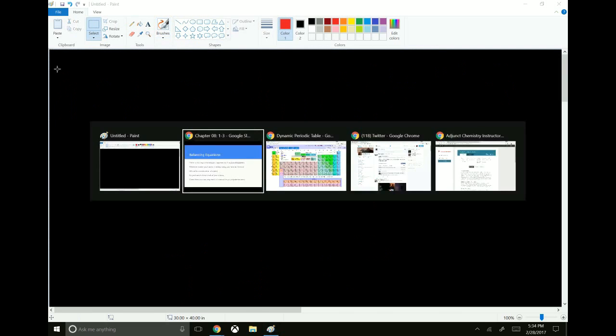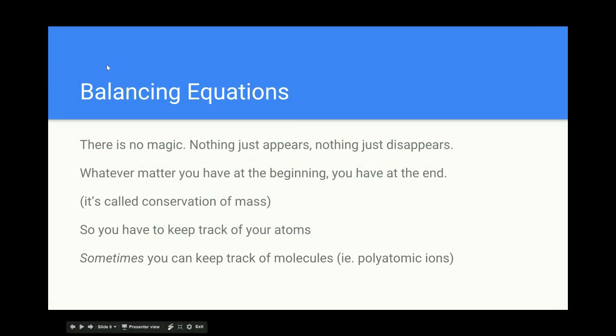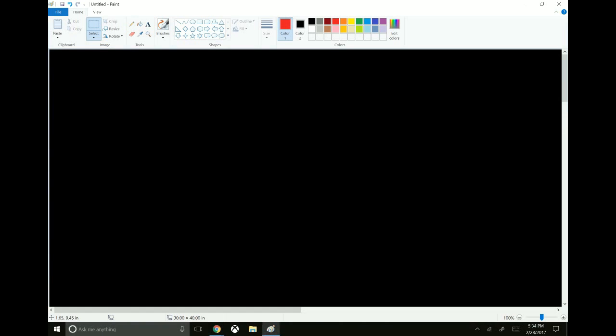Now, sometimes you can keep track of molecules instead of keeping track of individual atoms. So what I mean by that is for sodium carbonate, Na2CO3, let's call it aqueous, plus calcium nitrate, also aqueous. So we have two ionic compounds, each one of which has a polyatomic species, carbonate in one case, nitrate in the other.